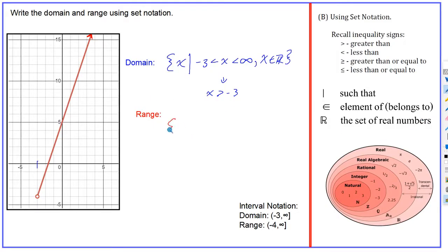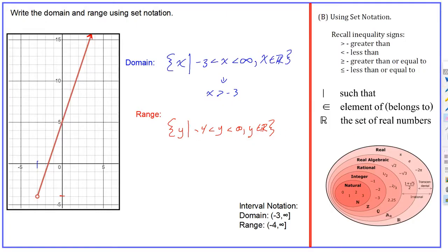For the range: squiggly bracket, set of y-values, 'such that.' What's the lowest it gets? It tries to reach minus four but doesn't include it, so it's just less than — minus four is less than y. What happens to the y-values? They go to infinity, so you can write minus four less than y less than infinity, with y an element of the real number system. Or you can simplify: if minus four is less than y is less than infinity, that's just saying y has to be bigger than minus four. Depending on your textbook, that simplified form is what they may give you.